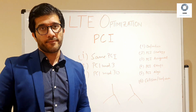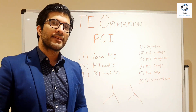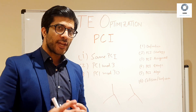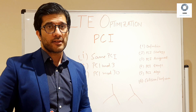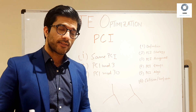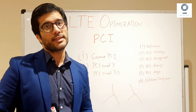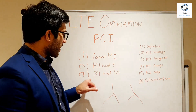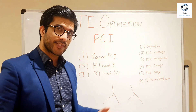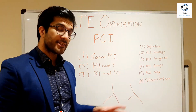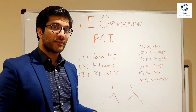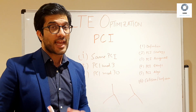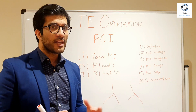Strategy number three is PCI mod 30. PCI mod 30 is used to avoid problems in the uplink, because there are 30 PRACH sequences reserved for uplink. If adjacent sectors or sectors looking at each other share the same PCI mod 30 value, you may experience issues in the uplink.